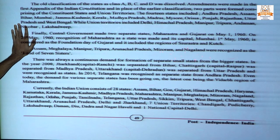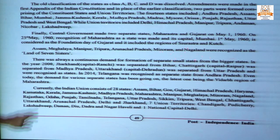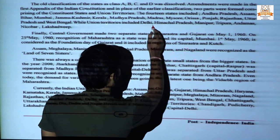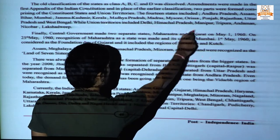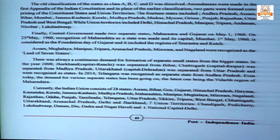The 14 states included Andhra Pradesh, Assam, Bihar, Mumbai, Jammu and Kashmir, Kerala, Madhya Pradesh, Madras, Mysore, Orissa, Punjab, Rajasthan, UP, and West Bengal. The union territories were Delhi, Himachal Pradesh, Manipur, Tripura, and Andaman and Lakshadweep.